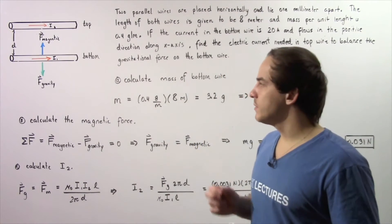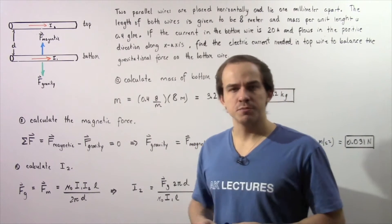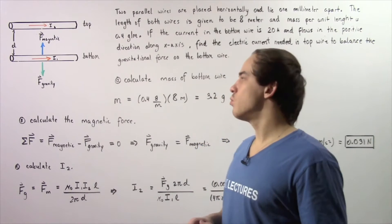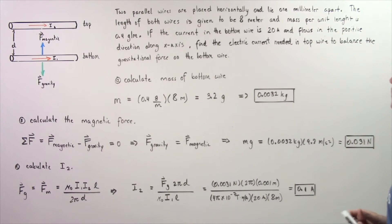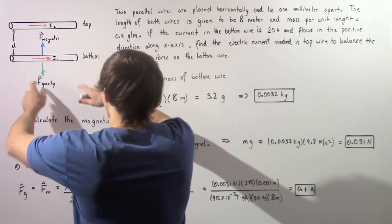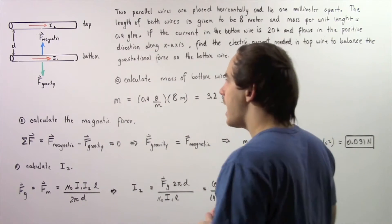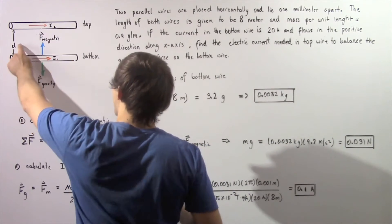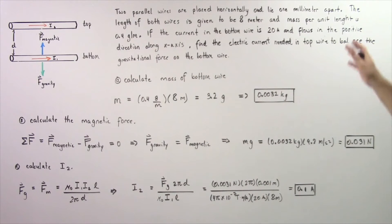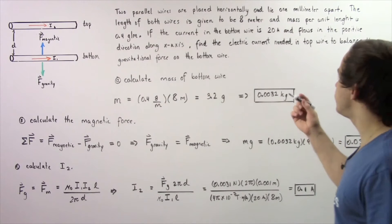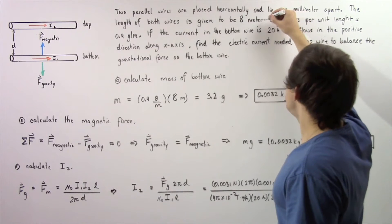Let's examine the following example that deals with magnetic forces produced by currents inside wires. Suppose two parallel wires are placed horizontally and lie one millimeter apart. Here we have our two horizontal wires which are placed parallel, and the distance between our two wires D is equal to 0.001 meter. The length of both wires is given to be 8 meters and the mass per unit length is 0.4 grams per meter.